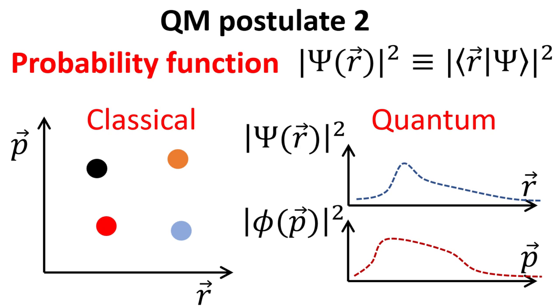The probability function of finding the particle in real space can be obtained by projecting the state vector onto the position eigenstates, or what we call the position basis. In similar vein, one can also represent the probability function in terms of the momentum basis. The concept of different representations in quantum mechanics will be discussed in a separate video in this quantum mechanics series. The modulus square of the wave function yields the probability function.